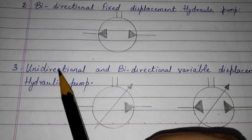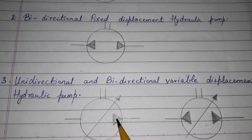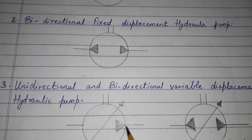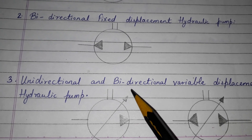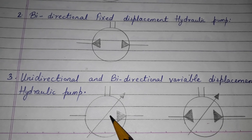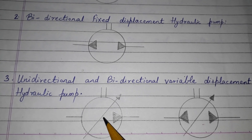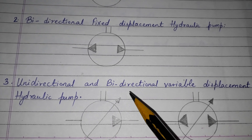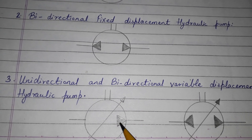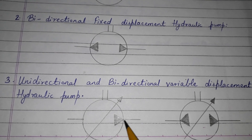Now, the unidirectional variable displacement pump. As you can see, the direction is one way, and here one arrow is shown. This arrow is the symbol for variable displacement, meaning the displacement or discharge can be varied in this kind of hydraulic pump. The triangle is filled, indicating it is a hydraulic pump, and the flow is in one direction.